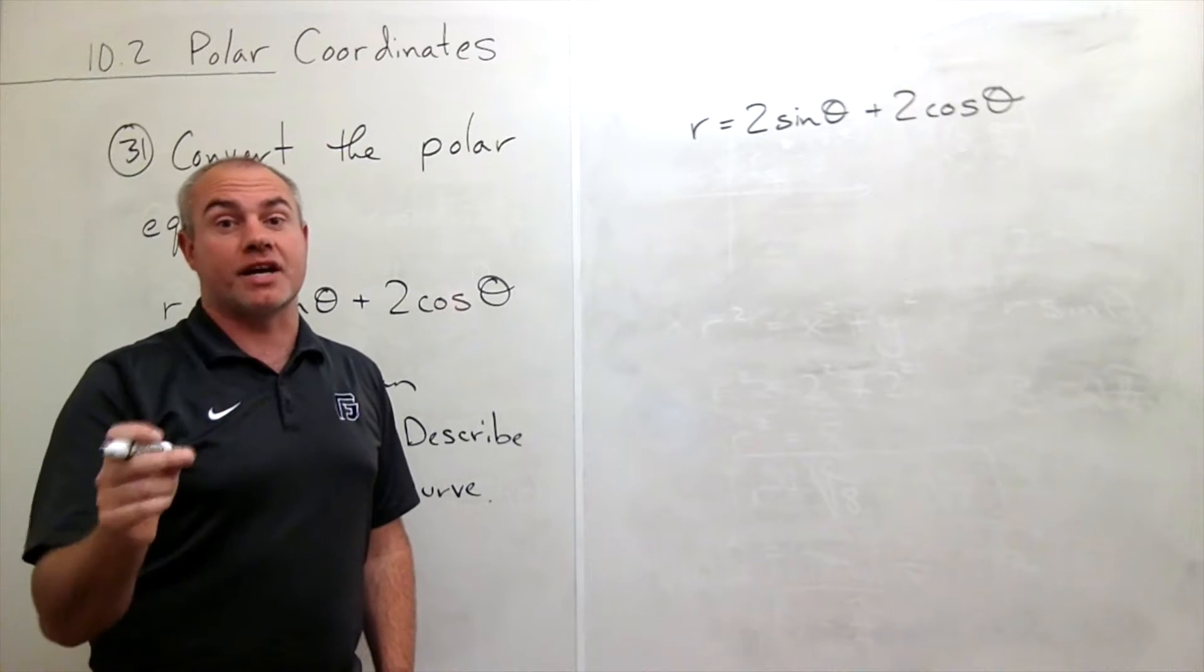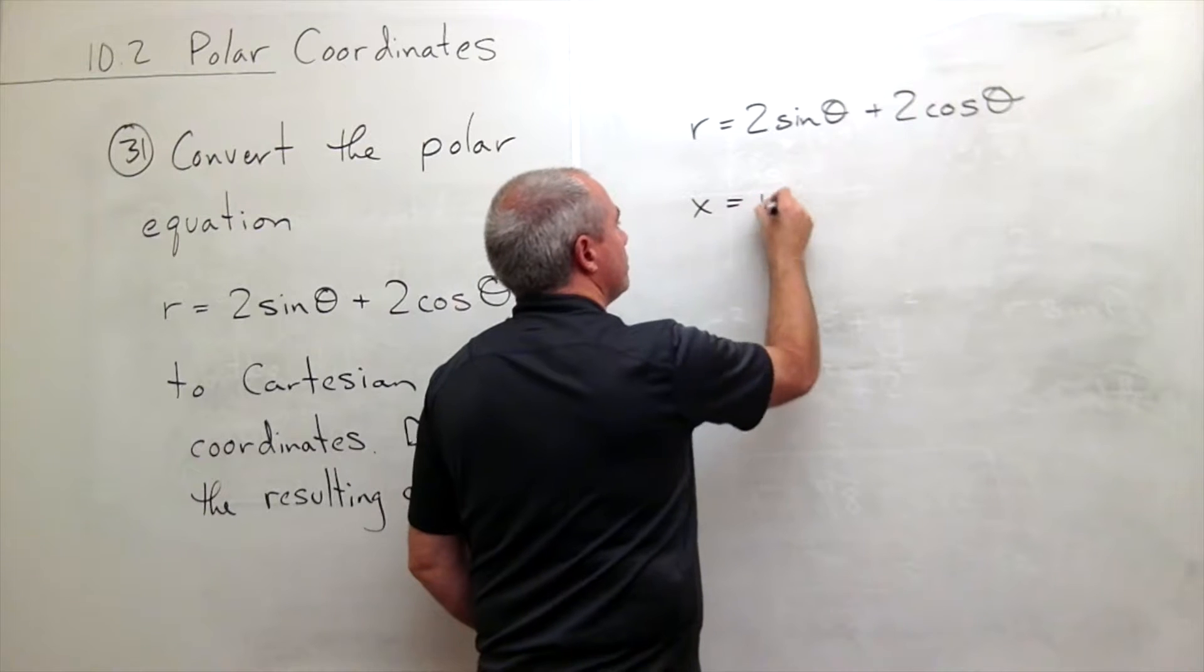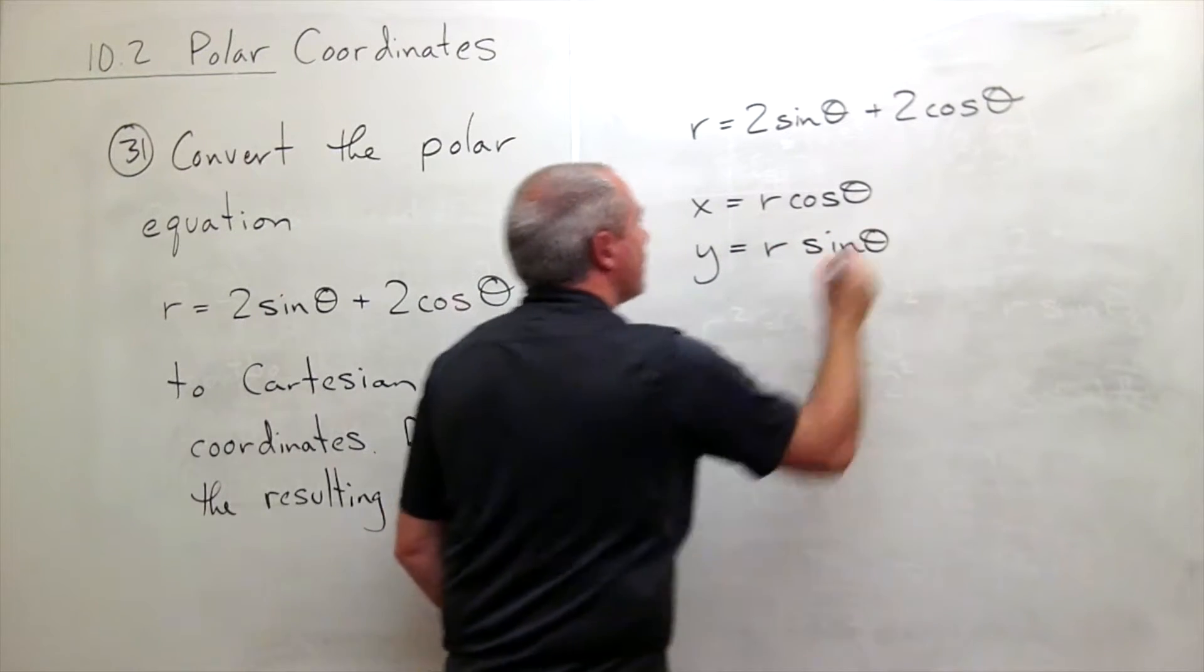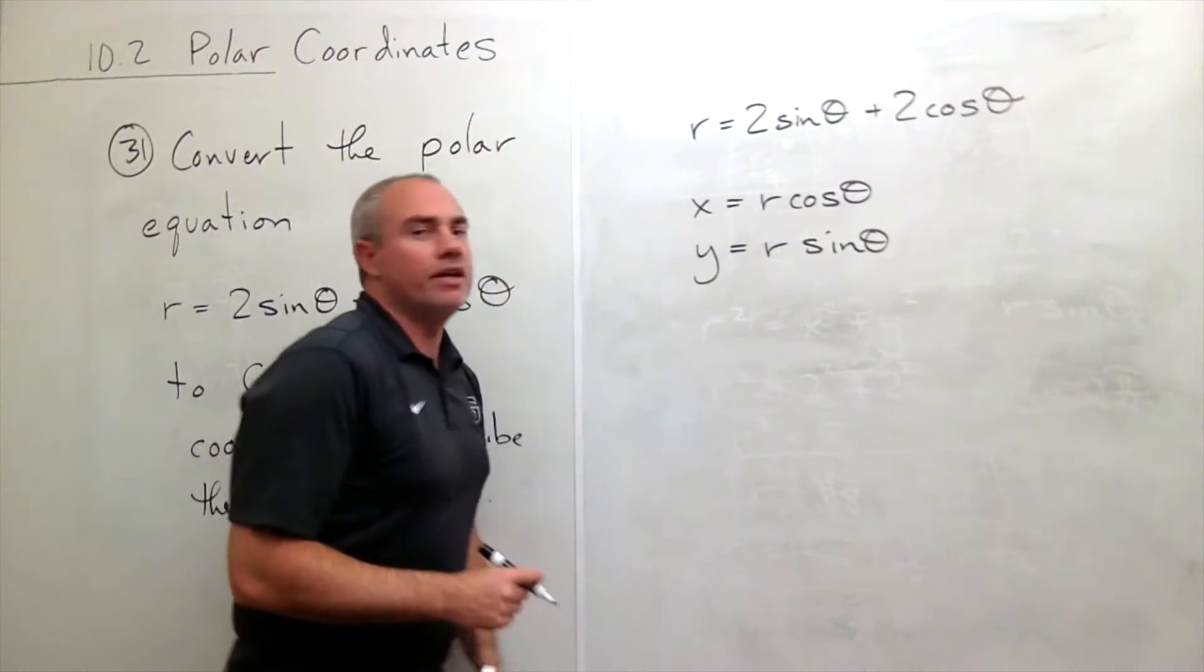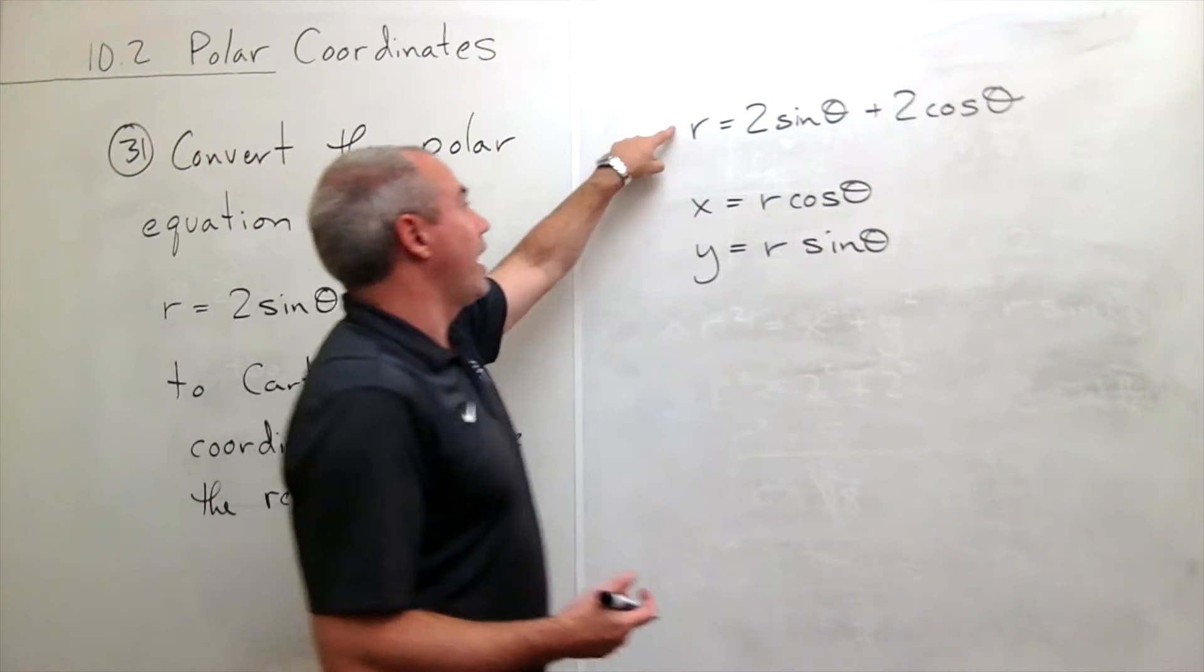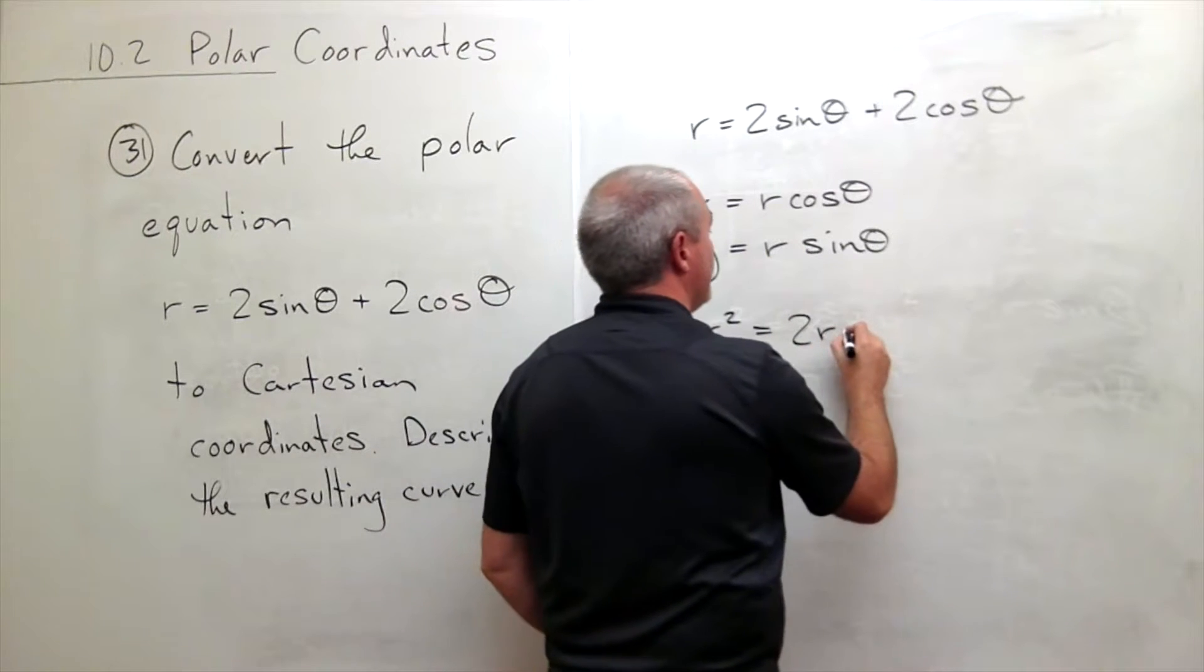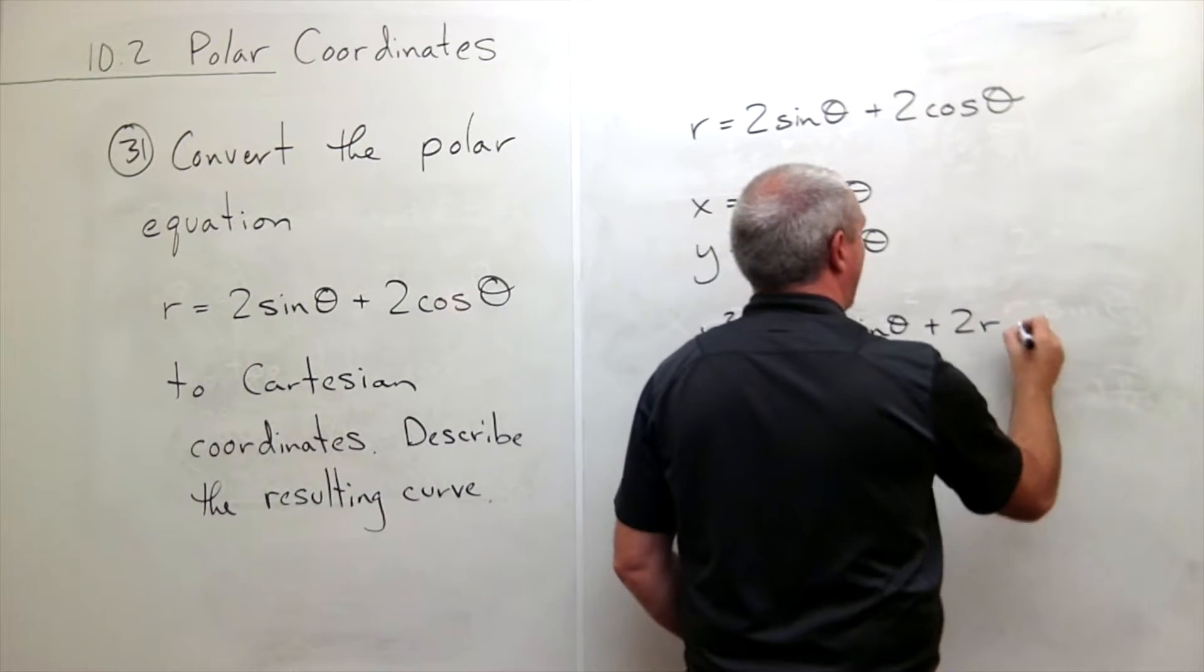I know that x is equal to r cosine theta and that y is equal to r sine theta. So what I want to do here is I need some r's in here to help me out. Let's just multiply both sides of that equation by r. If I do, I already have an r on this side so I'll have an r squared, and on the other side I get 2r sine theta plus 2r cosine theta.